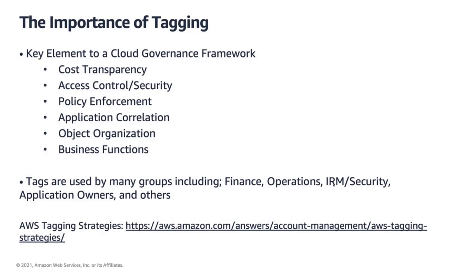AWS tags allow customers to assign metadata to their AWS resources. Each tag is a simple label consisting of a customer-defined key and an optional value that will make it easier to manage, search for, and filter resources, whether leveraging API calls or direct user interface reporting on the AWS console. There are no inherent types of tags, and so this enables customers to categorize resources as they see fit — whether by purpose, owner, security profile, or other criteria. This is a key element to an effective cloud governance framework, and is critical to maintaining consistent access control and security observation over your environment. Please see the link at the bottom of this slide for more information on AWS tagging strategies.